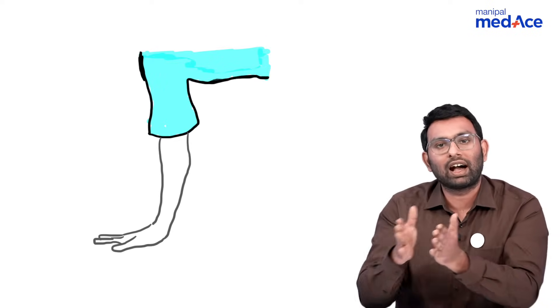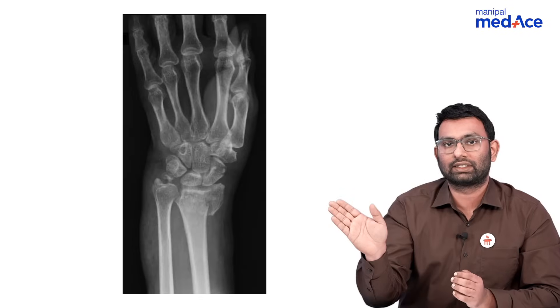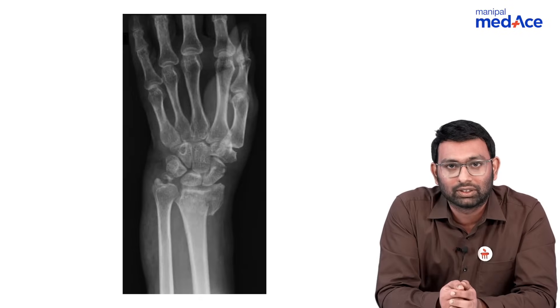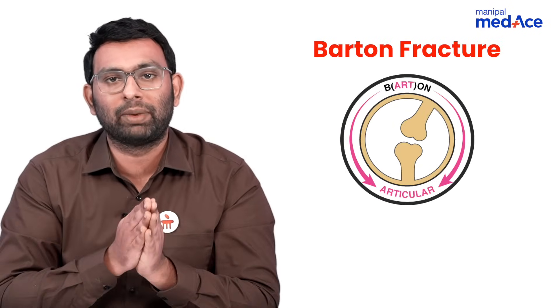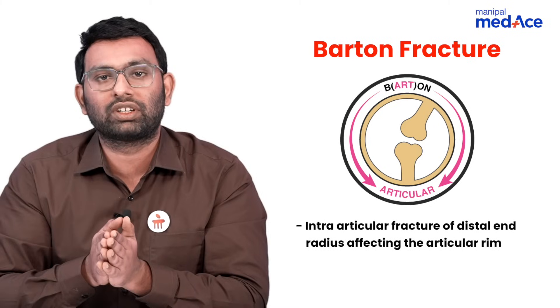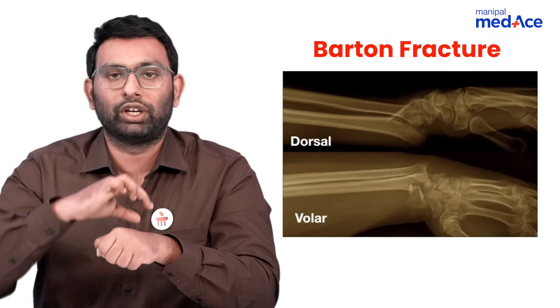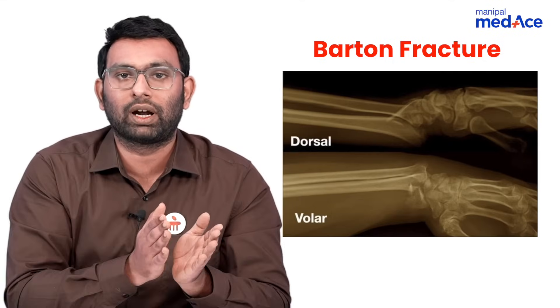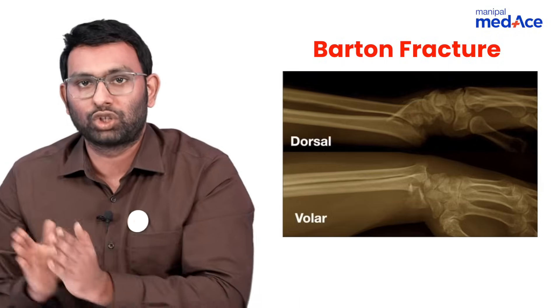The third story is of a young man who has had a high velocity injury to the wrist, and following this he comes with an x-ray looking like this. This is a case of a Barton's fracture where there is damage to the intraarticular rim — an intraarticular fracture with the distal articular rim being damaged. It can be of two types: if the distal fragment goes into volar angulation, it is a volar Barton; if the distal fragment goes into dorsal angulation, it is a dorsal Barton.